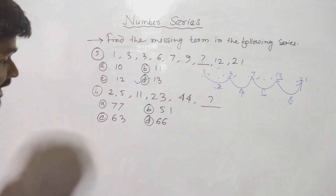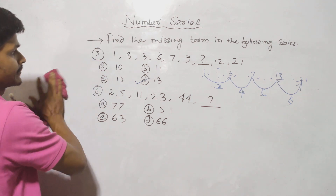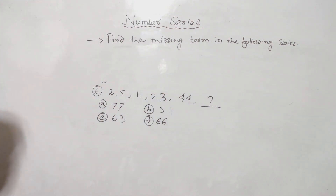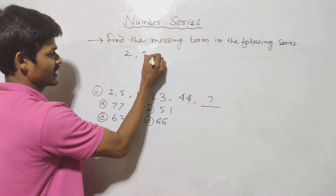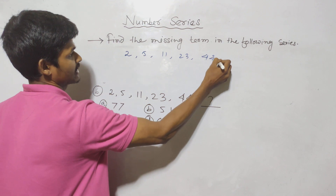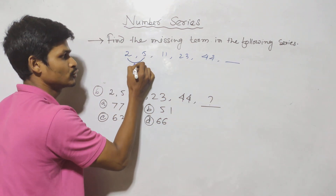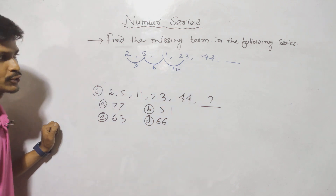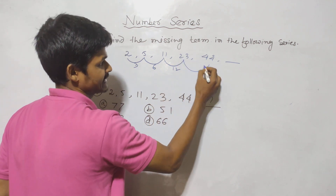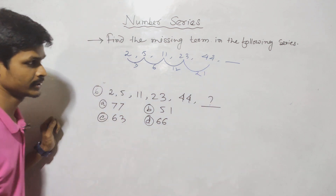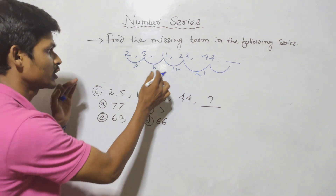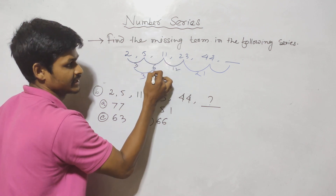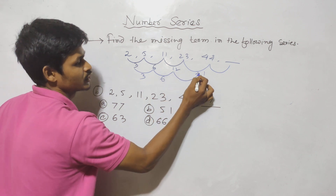The next question: 2, 5, 2, 5, 11, 23, 44. We can see the gaping: 5 minus 2 equals 3, then 6, then 11 minus 2 equals differences of 4, 6, 11 minus 2. Then 23 with gaping 6 minus 3 equals 3. Then 44 with gaping 6 minus 3 equals 3. Pattern: 6 minus 21.